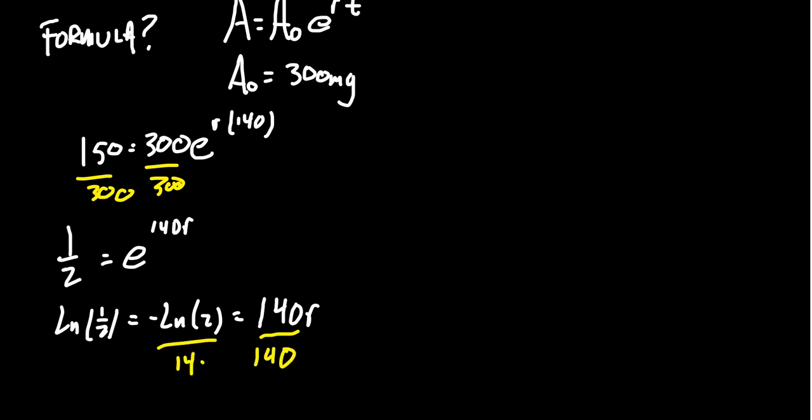You get that the decay rate of our isotope will equal negative ln(2) divided by 140. This is a principle you can use in general. If you know the half-life of your radioactive isotope, then the rate of decay is always going to equal negative ln(2) divided by your half-life.